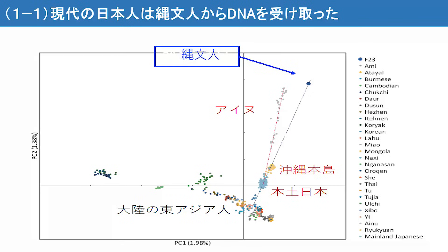このD1b2はD1bというタイプの中でも珍しいタイプに位置することが分かります。これらの結果からD系統は縄文人に主要な系統である可能性が見えてきました。次に船泊23号を用いて主成分分析を行いました。縄文人は一番上に位置しており、それに遺伝的に近いのがアイヌの人々です。その次に近いところにプロットされているのが沖縄本島の集団で、その次が本土日本人となります。